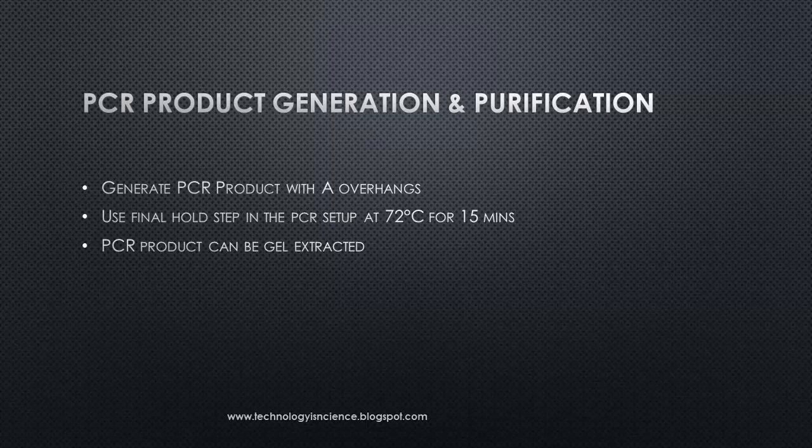Commercial kits are available for PCR purification. For gel extraction, depending on the size of the PCR product, a suitable percentage gel can be selected. Try to avoid using sodium borate for the agarose gel, as it can reduce the efficiency of ligation. Use TAE buffer instead of sodium borate, and then gel-extract the product for use in the ligation step.